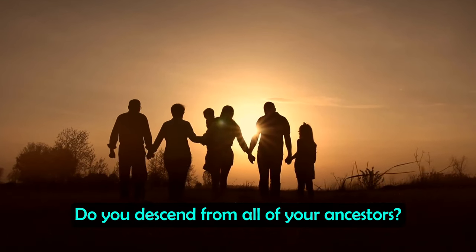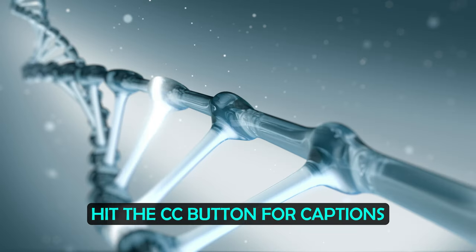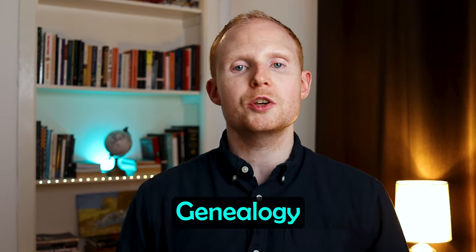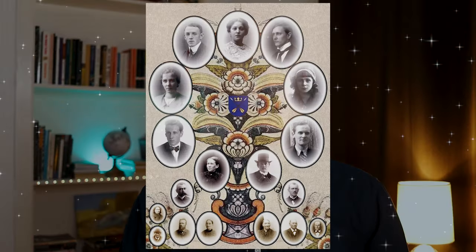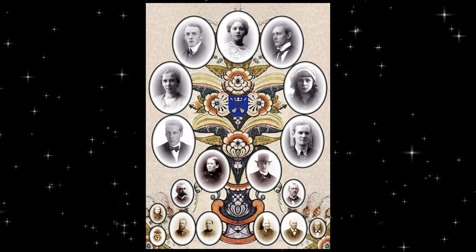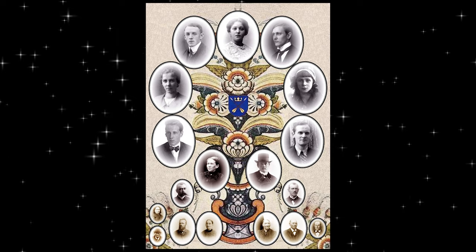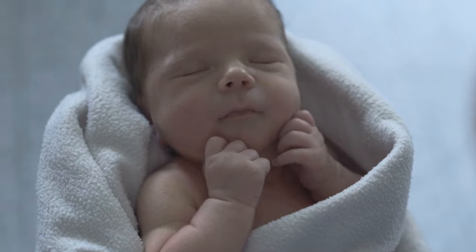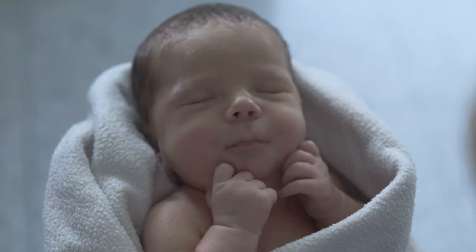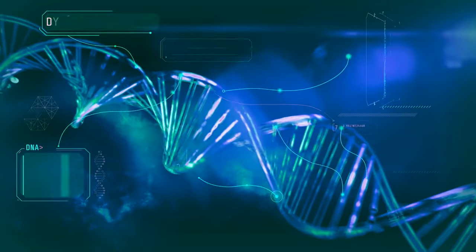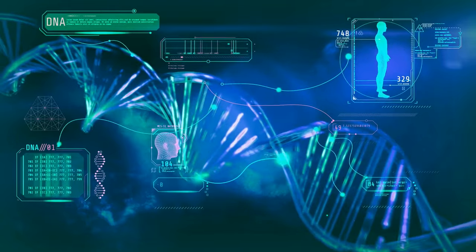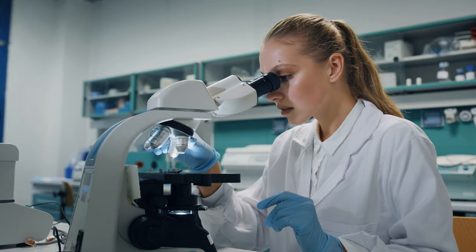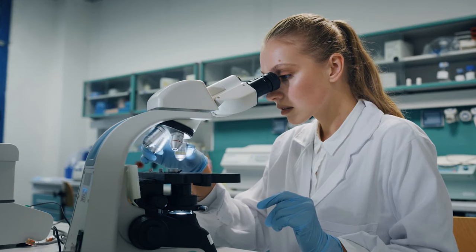Do you descend from all of your ancestors? Well yes and no at the same time. If we're speaking about genealogy and tracing your family tree, then yes you do descend from all of your ancestors, and you've probably inherited certain features such as shared surnames and perhaps even family names. Also if they hadn't have been born and reproduced, then you obviously wouldn't be watching this video. But if we're speaking about your actual DNA, then no, you don't descend from all of your ancestors genetically, and this can create some surprising results if you take a DNA test to trace your ancestry.